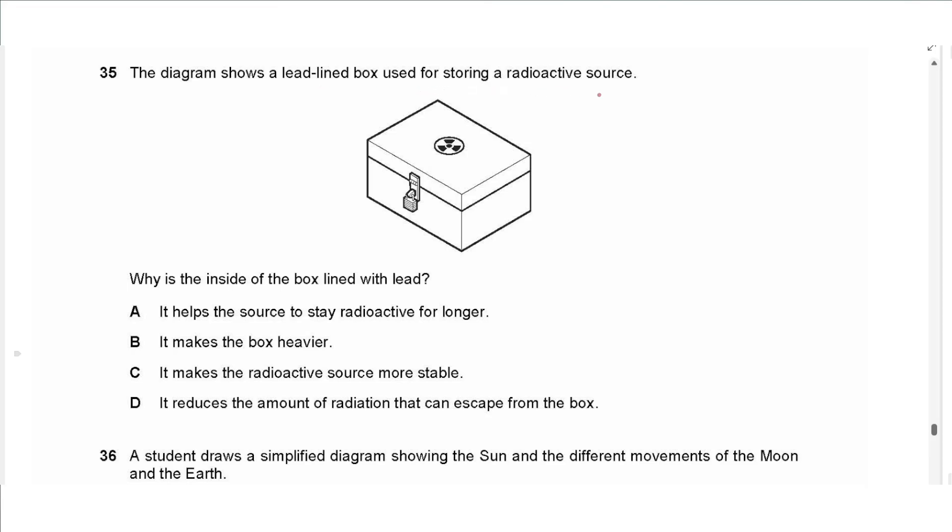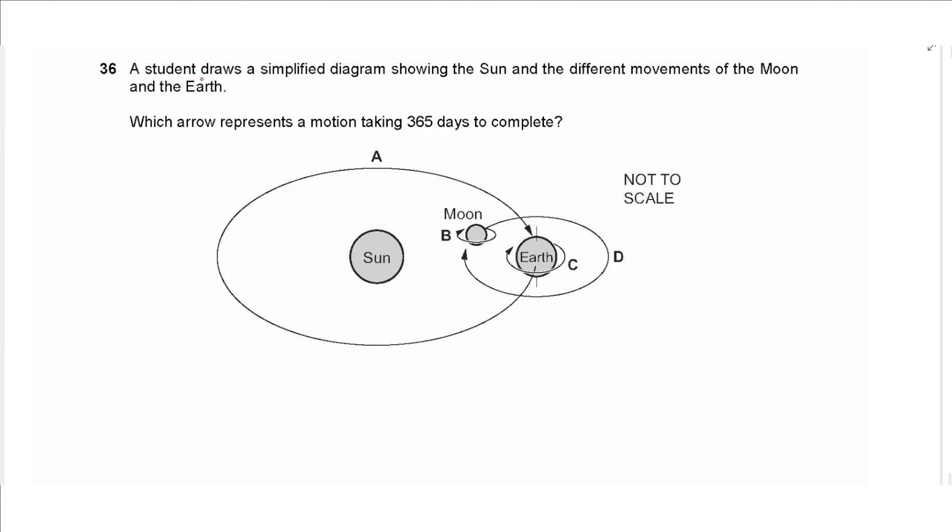Question 35 says the diagram shows a lead lined box used for storing a radioactive source. Why is the inside of the box is lined with lead? Because it helps the source to stay radioactive for a longer time, no. It makes the box heavier, no relation. It makes the radioactive source more stable, no. It reduces the amount of radiation that can escape, yes, because it absorbs the radiation. Lead absorbs the radiation, so the answer is D.